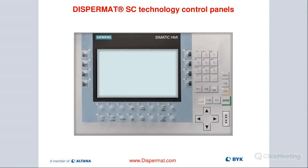We also have an LPC option where you actually create your own program or tie it into your own QC package. Some people have integrated scales with that solution — basically controlling the process the way you want, adding different parameters. One problem with this particular solution is that it's made by Siemens, and the lead times are excruciatingly long — the last I heard was 12 to 16 months lead time.